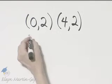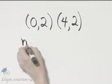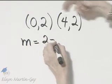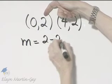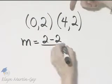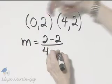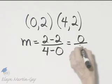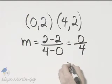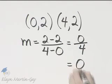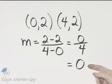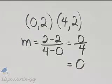Now let's use the slope formula. Slope is y minus y over x minus x, and notice I get zero over four. That is zero. Remember, every horizontal line has a slope of zero.